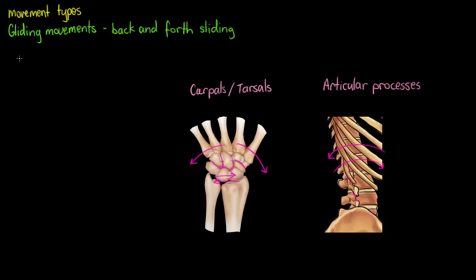Now that we know our three basic movement types, let's recap on them all really quickly. In the first video I said that angular, gliding, and special movements were the three main types. But more correctly, rotation should replace special movements if we are talking about the majority of joints in the body. Although special movements have many more subdivisions, they are often movements that are only achievable at one specific joint, whereas angular, rotation, and gliding can be achieved in many places within the body.